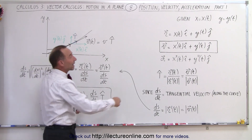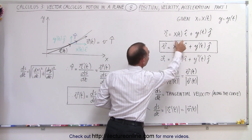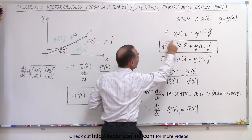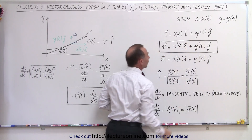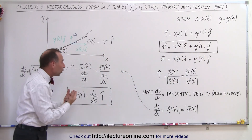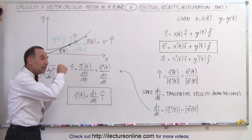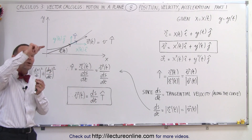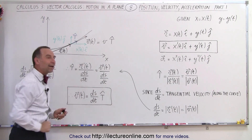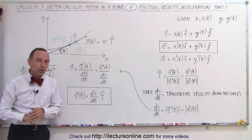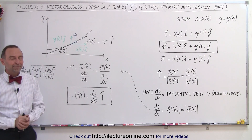So there are two ways to express the velocity vector: we can do it in terms of the x and y components — the derivative of the x component and the derivative of the y component of the position vector — or we can express it in terms of ds/dt, the speed at which we move along the curve, multiplied by the unit tangent vector. And that's how it's done.